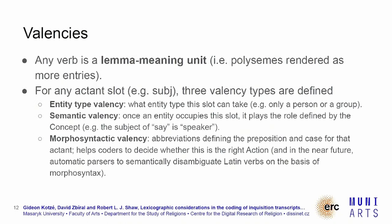With valencies, any verb can be a lemma-meaning unit, which means polysemes are rendered as different, separate entries. For any actant slots such as the subject, three valency types are defined: entity type valency — what entity type it can take — semantic valency, and morphosyntactic valency. The latter defines a preposition and a case for that actant and helps coders decide whether this is the right action.